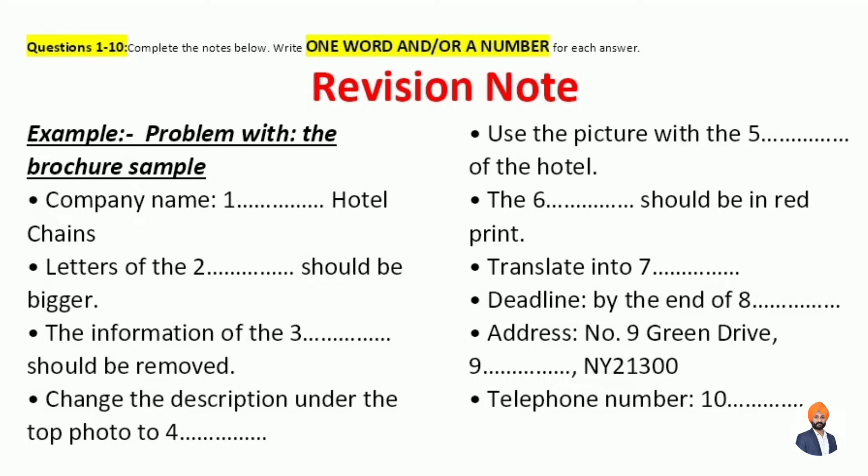Just keep me updated. So roughly, when can we get the revised print? We need it before the end of July. It's late June now. Roughly, it'll take three weeks to re-edit. So we'll definitely be ready before the deadline. Great. To where shall we send the samples? The address is number 9, Green Drive, Clifton, NY21300.